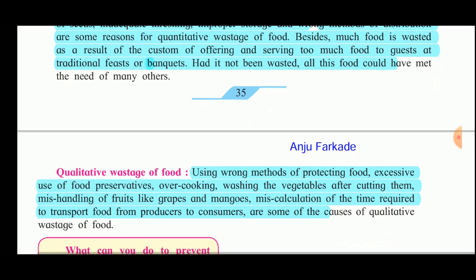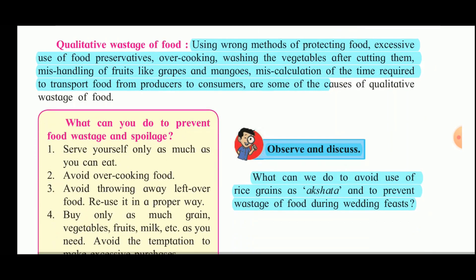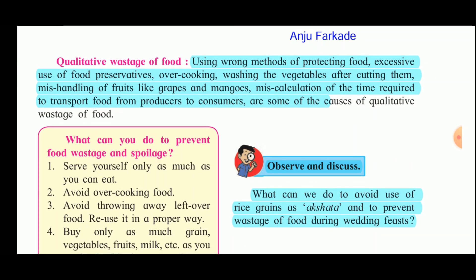Wrong methods of farming like hand sowing of seeds, inadequate threshing, improper storage, and wrong methods of distribution are some reasons for quantitative wastage of food. Besides, much food is wasted as a result of the custom of offering and serving too much food to guests at traditional feasts or banquets — food that could have met the needs of many others. Qualitative wastage of food means using wrong methods of protecting food, excessive use of food preservatives, overcooking, washing vegetables after cutting them, mishandling fruits like grapes and mangoes, and miscalculation of the time required to transport food from producers to consumers.